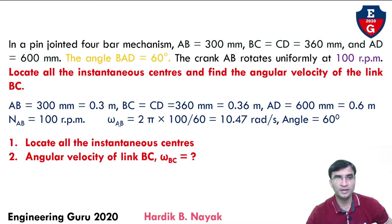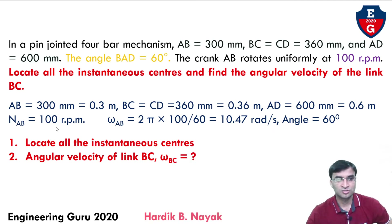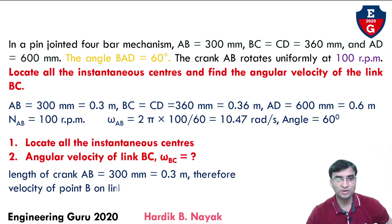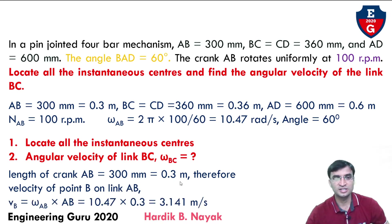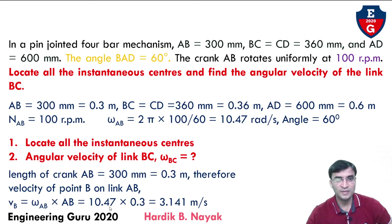From this, we can find omega_AB equal to 2*pi*N divided by 60, where N equals 100. So omega_AB equals 10.47 radians per second. In this problem, we have to locate all the instantaneous centers and find the angular velocity of link BC, that is omega_BC. The length of the crank is 300 mm, so converting to meters that is 0.3. The velocity of point B on link AB is V_B. Since point A is fixed, V = R * omega, meaning omega_AB multiplied by the length of AB. Omega_AB is 10.47 and AB equals 0.3, so velocity of B equals 3.141 meters per second.